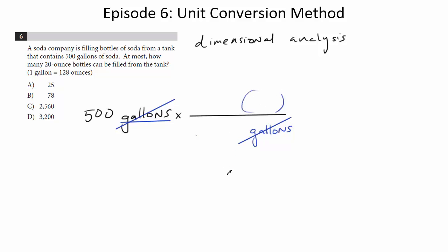So whatever unit's up here is what we're going to be left with. So whatever you've got as a unit here should be the unit on bottom. Now the unit on top here is going to be, in this case, ounces, because we're converting from gallons to ounces.